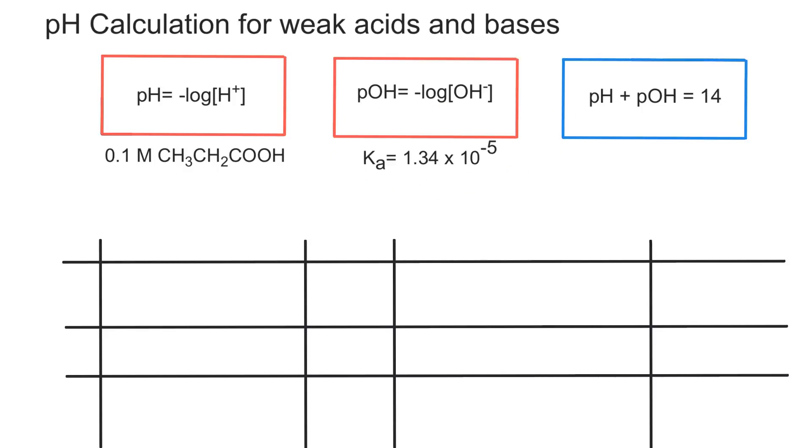So the first thing you want to do is always write down the equation you have. So we start with the propanoic acid which would be CH3CH2COOH. And that's going to react with water to form CH3CH2COO-, also called propanoate, and the hydronium ion, H3O+.